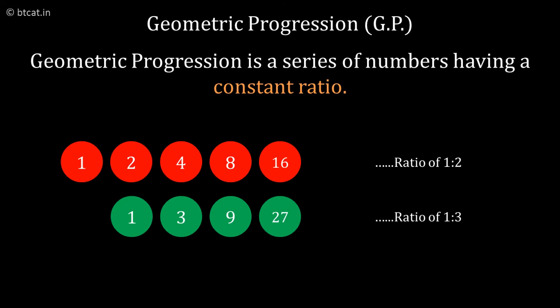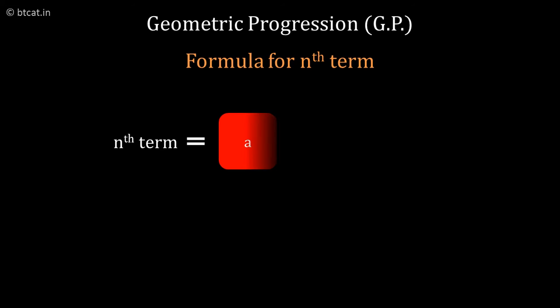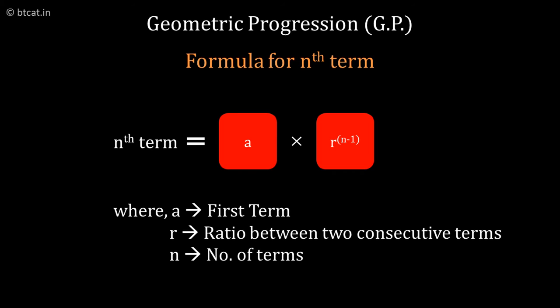So for a GP series, if I define the first term as A and the common ratio as R and the number of terms as N, I will get the Nth term as A R to the power of N minus 1. This N minus 1 is the complete power.